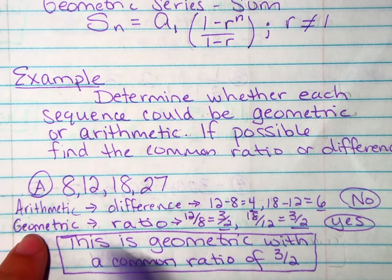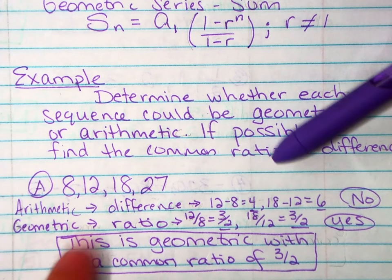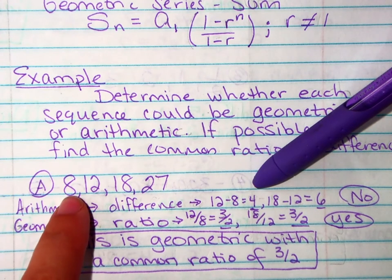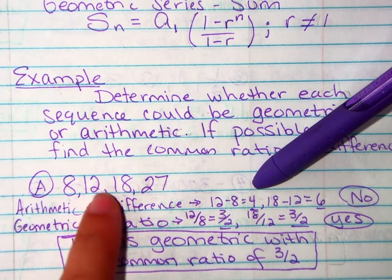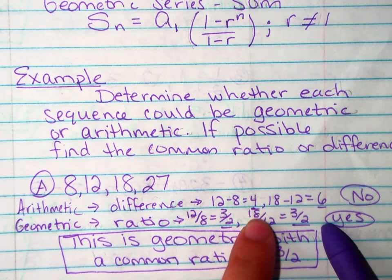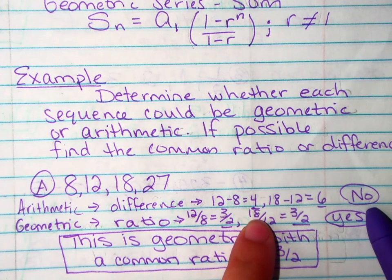So with arithmetic we're talking about the difference. So you are going to take the second minus the first and I get 4. Then do the third minus the second and I get 6. So 4 and 6 are not the same so I can stop and I can say it is not arithmetic.